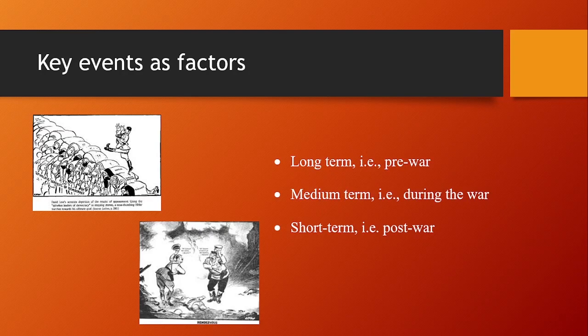Short-term events would include any of the post-war events that followed the war in Europe, including the Soviet Union's formal occupation of Eastern Europe — with maybe events in Czechoslovakia seen as the last straw — America's successful testing of a nuclear bomb, Churchill's Iron Curtain speech, events in Greece, the Truman Doctrine and Marshall Aid, right up to the Berlin blockade. But don't just raise these events; explain why they are significant, linking them to things like territory, power, and mistrust.